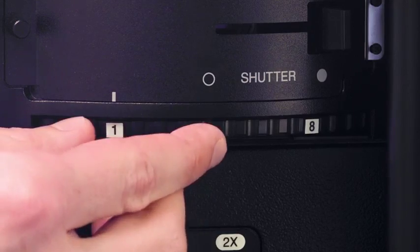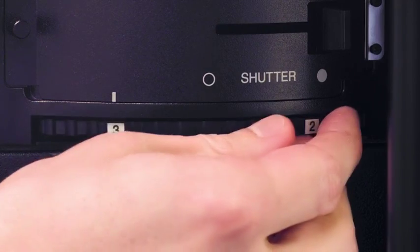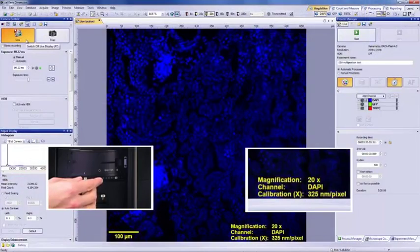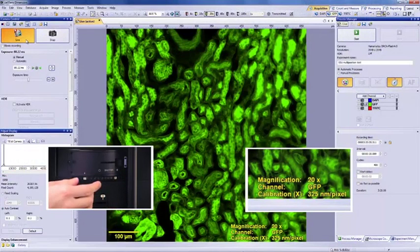For example, moving the fluorescence filter cube to it automatically updates the pseudo-color of the image being acquired on a monochrome camera. The channel information, such as excitation and emission light wavelengths, is saved into the acquired image as well.